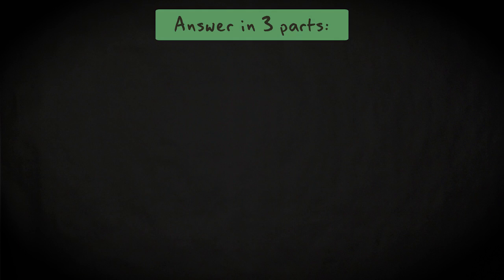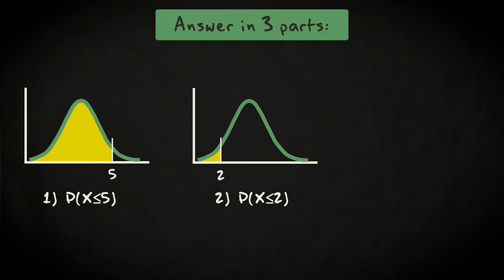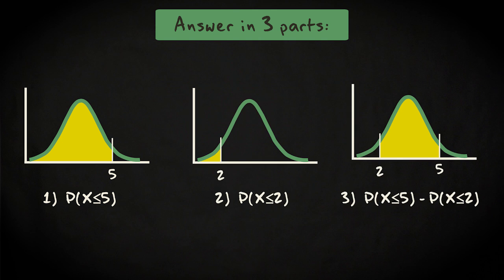This question needs to be answered in three parts. First, the probability of value smaller than 5 needs to be calculated. And subsequently, the probability of value smaller than 2. And last, these need to be subtracted to get the probability for the desired range between 2 and 5 days.